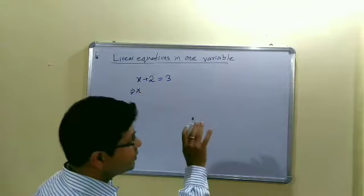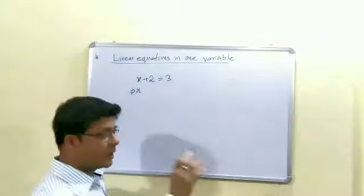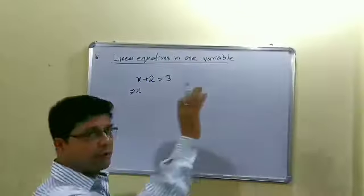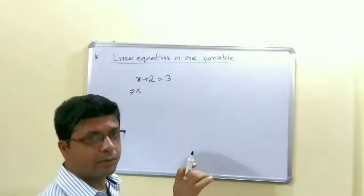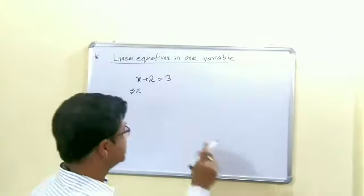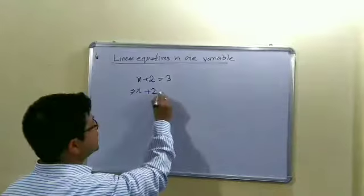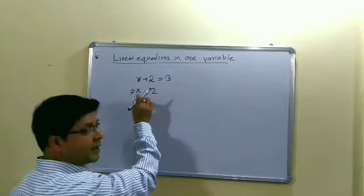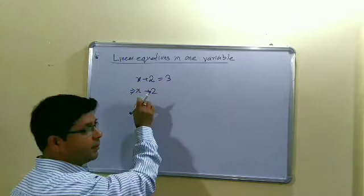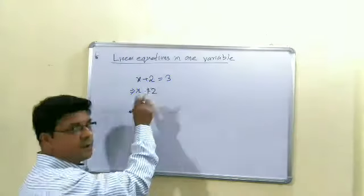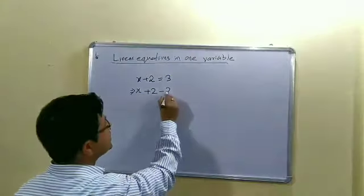When we do sums in exam or in class, we do not do the whole procedure - mechanically we will do it. But what is the actual process? Let us know. x + 2, we have to find the value of x. So to find the value of x, we have to remove this 2. How to remove this 2? We shall subtract.